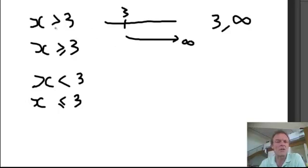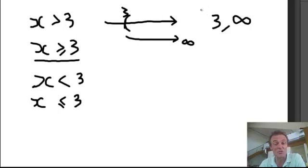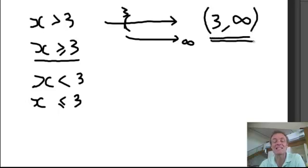Now, because it doesn't have the equal sign, we use a parenthesis. So basically, that's sketching 3 to infinity — x's are greater than 3. To write it as interval notation, we write parenthesis 3 to infinity — that there is interval notation: 3 to infinity, x's greater than 3.